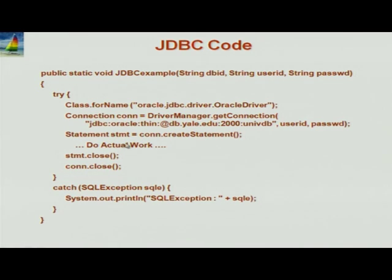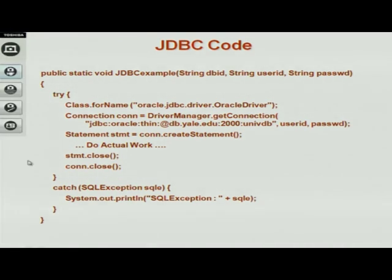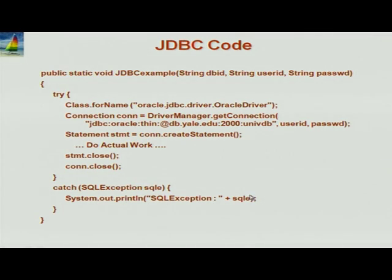The connection itself is what you use to do the actual work. First, you get a statement from the connection. The statement is essentially a way of attaching a SQL query and executing it. When you're done, you have to close the statement and close the connection. If there's an exception, the syntax in Java is try-catch. Anywhere, you may get an SQL exception, and it catches it and prints what went wrong. To be safe, it should also close the statement and connection in the catch block.